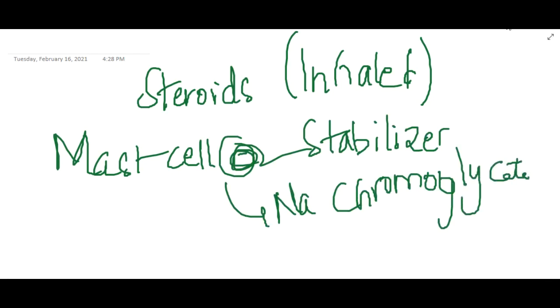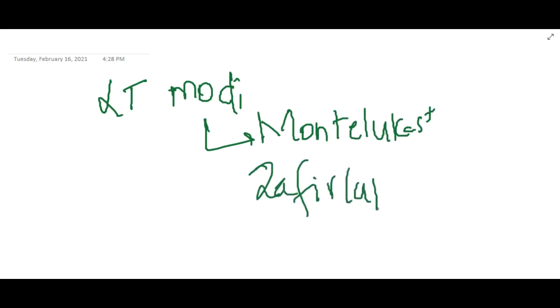Next, you can have leukotriene modifiers. Leukotriene modifiers include two types: we have montelukast and we have zafirlukast. These montelukast or zafirlukast are mainly used for exercise-induced asthma or seasonal asthma. And we can even give theophylline to the patient.